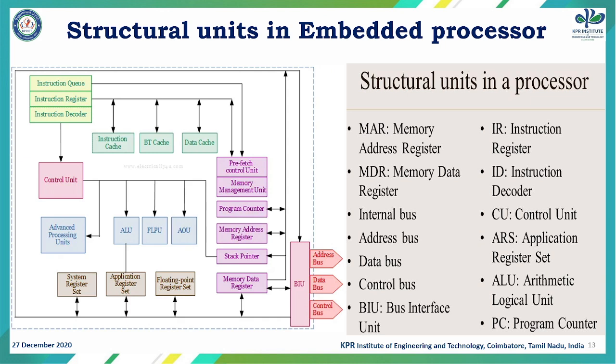One instruction at a time enters the instruction register, where instruction execution starts. With the help of the instruction decoder, the control signals required for instruction execution are generated by the control unit. The instruction decoder gives sufficient information to the control unit for generating those control signals.